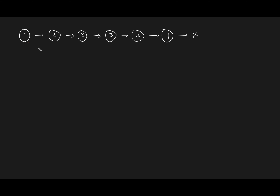For example, if we take this linked list, this one is equivalent to this one, this two is equivalent to this two, this three is equivalent to this three. So I can call it a palindromic linked list. A palindrome means if you write it in reverse order it's exactly the same. That is what a palindromic linked list is.